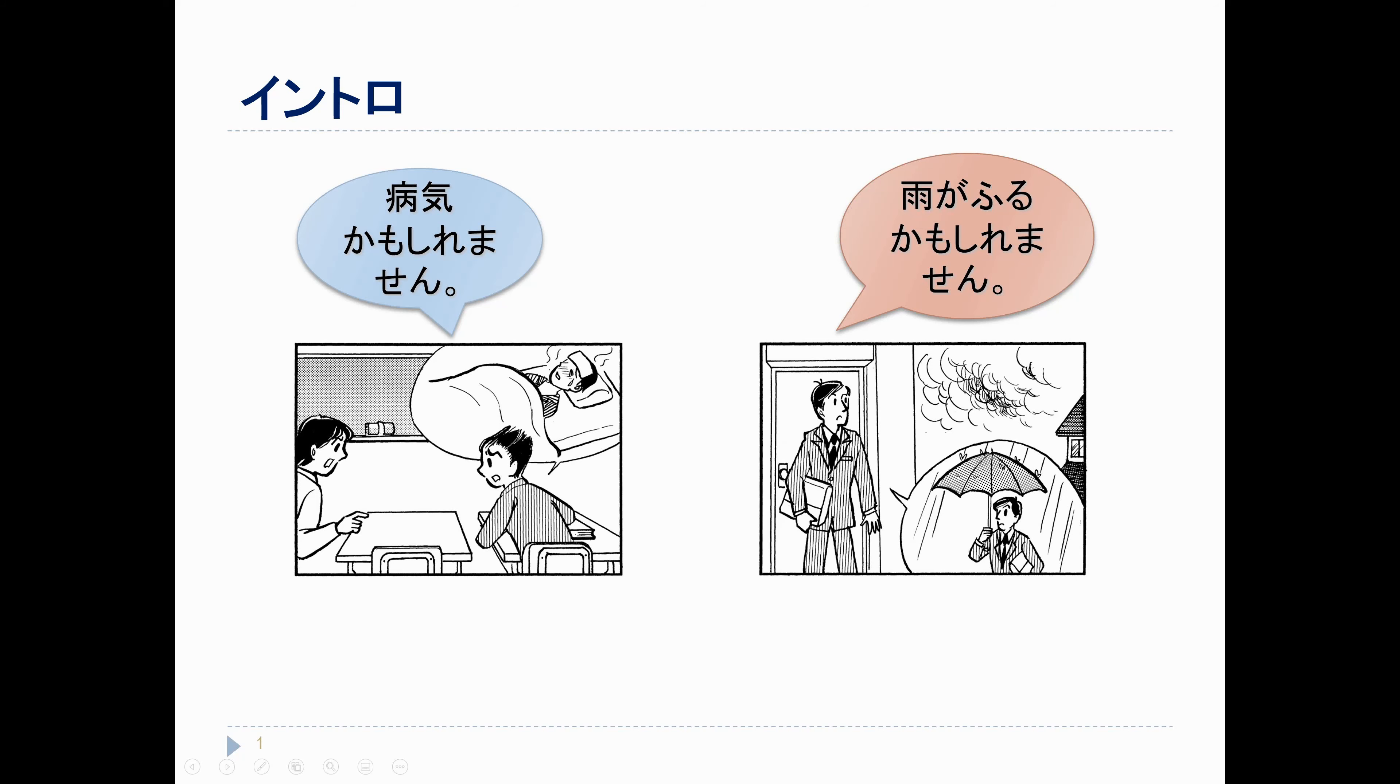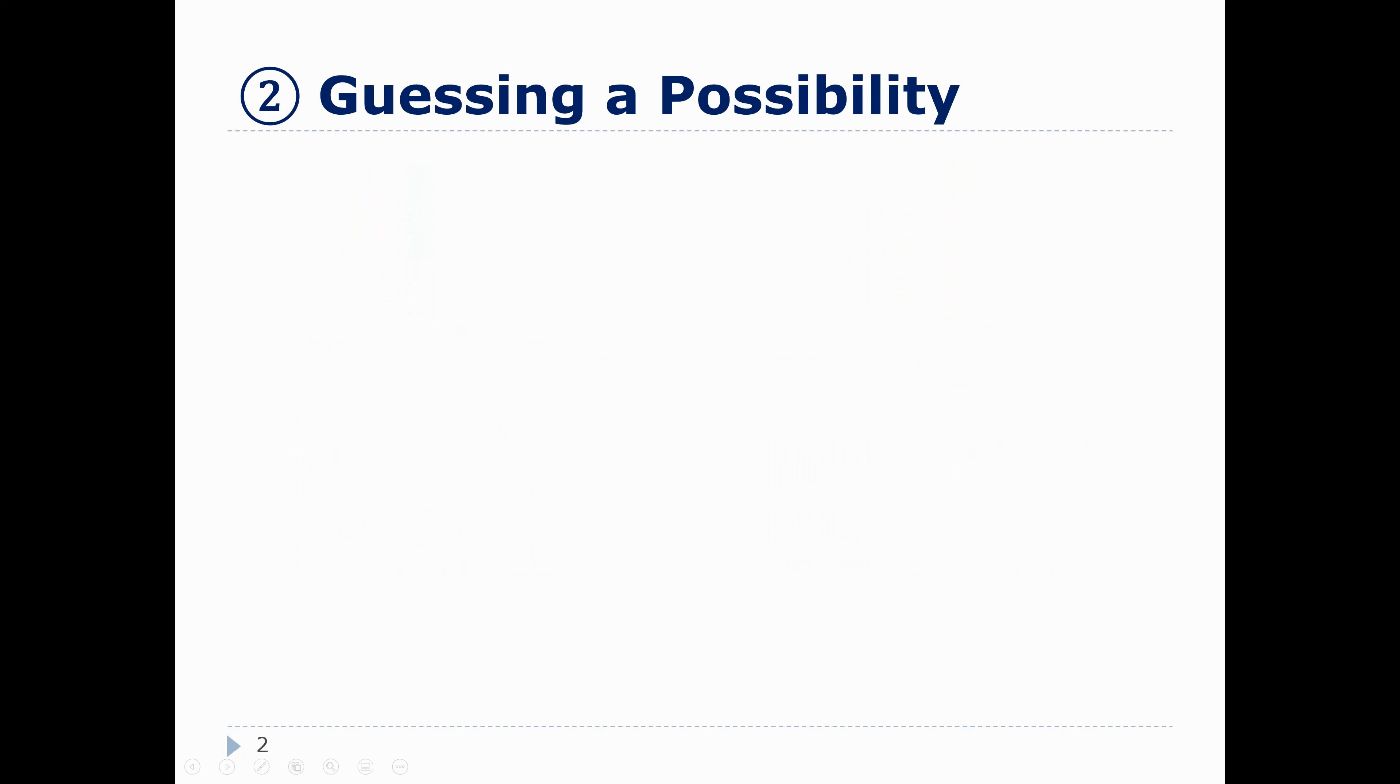This かもしれません is our way of talking about what might be true. So, we use かもしれません. Or, in the short form... this しれません, this is a verb, right?